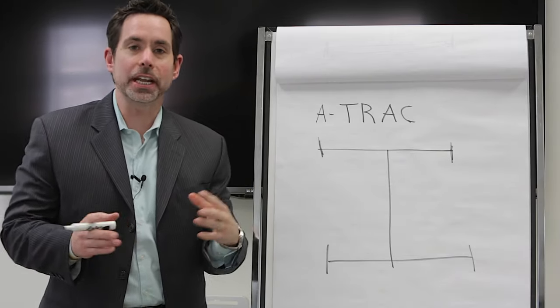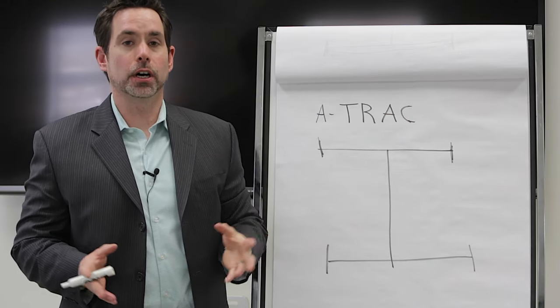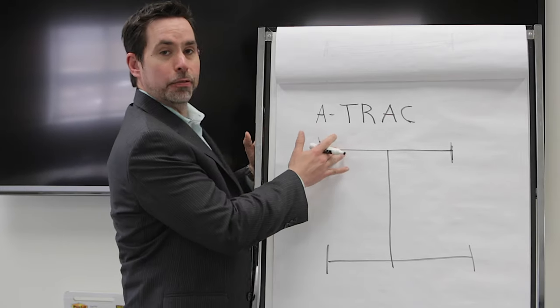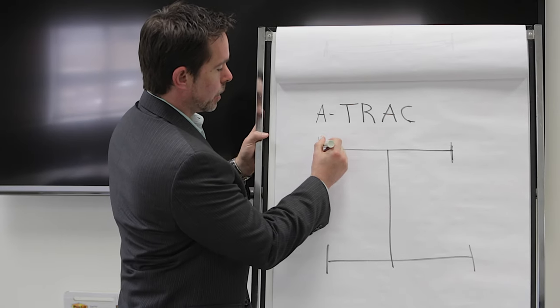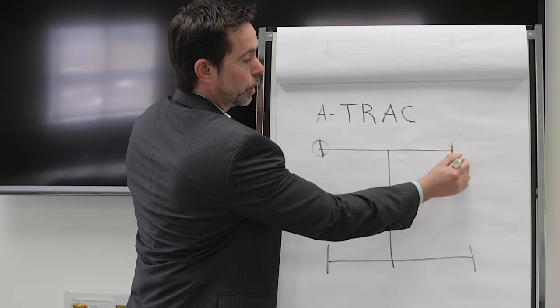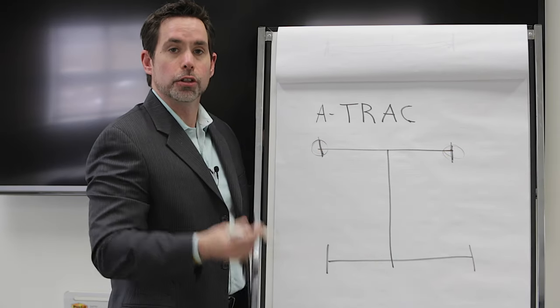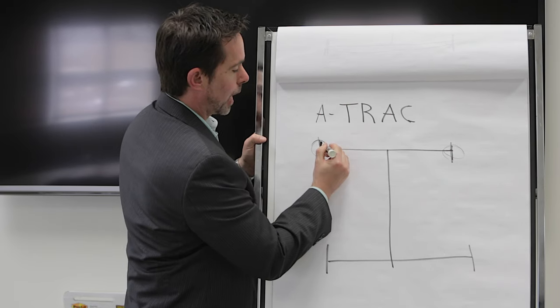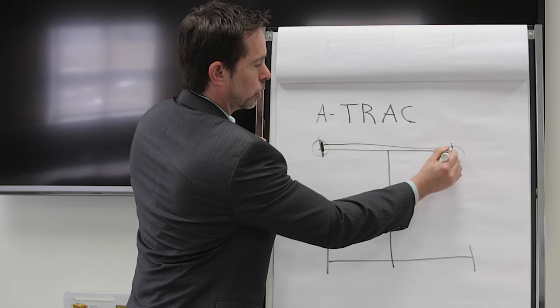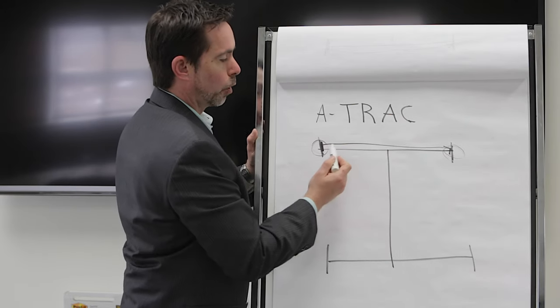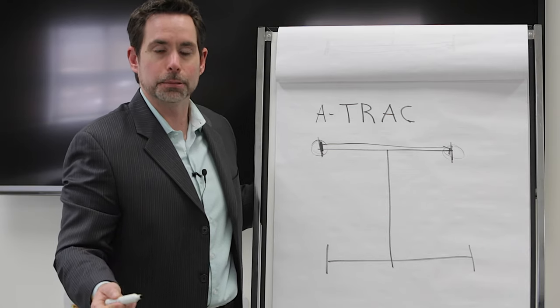So once I have A-Track on in my truck and four-wheel drive low, here's what happens. On my front axle, let's say this wheel has no traction, this wheel has traction. The brakes are going to apply to that wheel and allow power to go to this wheel over here with traction, also allowing both front wheels to turn at about the same speeds.